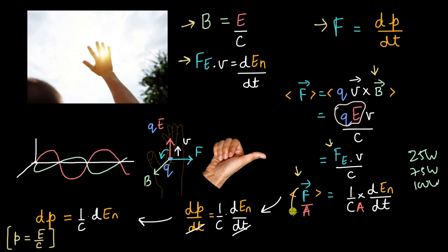And the left hand side has a name. Left hand side is pressure. This has a name. This is called radiation pressure. This is basically light's push on an area of one meter square per second.